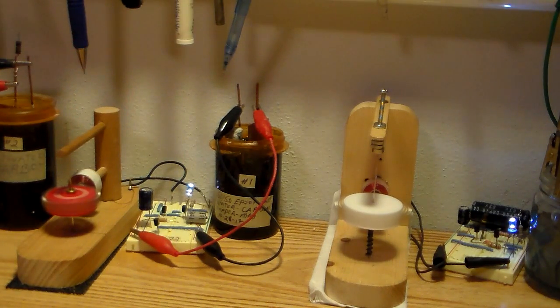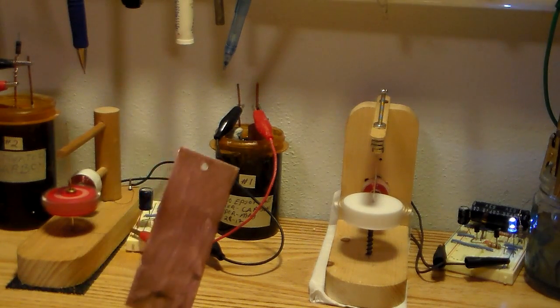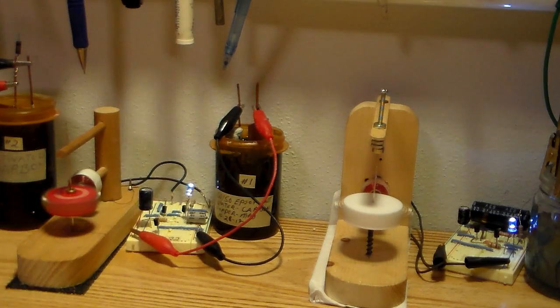Then I just poured the Epsom salts in there until the container was full and that's all the cell consists of. There's nothing else there. Just distilled water, Epsom salt, that little sheet of copper and a little fire starter in there.